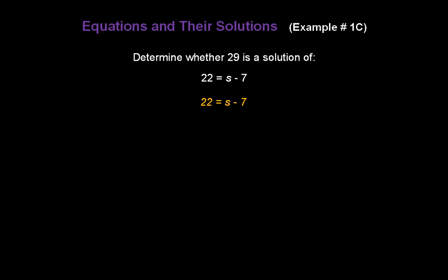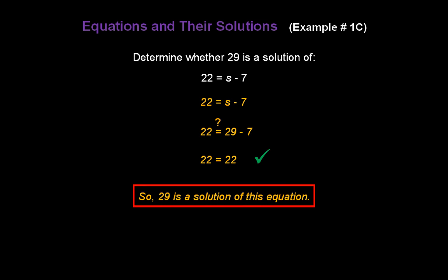Let's try the number 29 this time. Replace s with 29. Does 22 equal 29 minus 7? Solve the right-hand side to find out. Does 22 equal 22? Yes, it does. 22 equals 22. So, 29 is a solution of this equation.